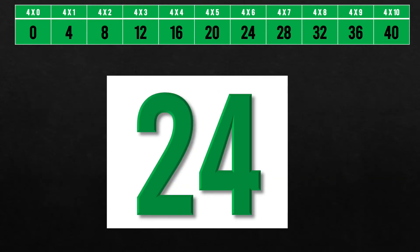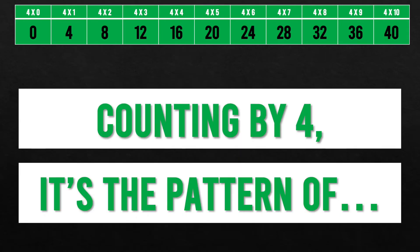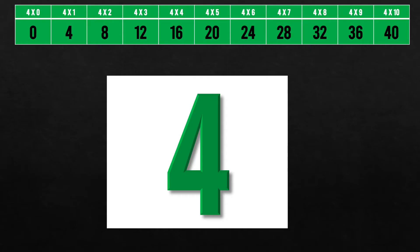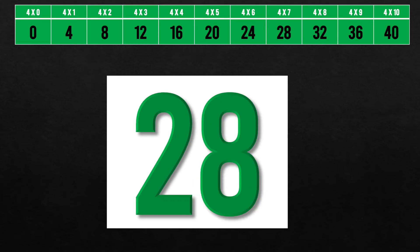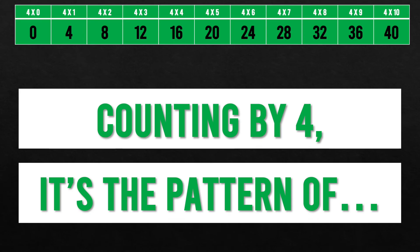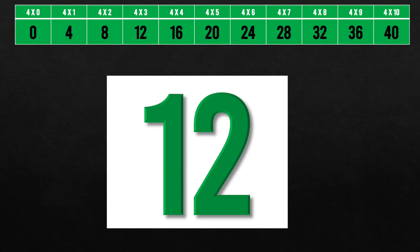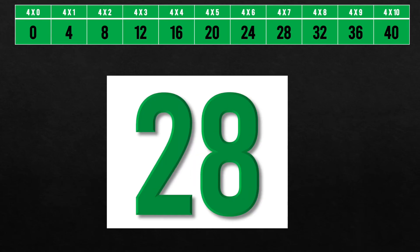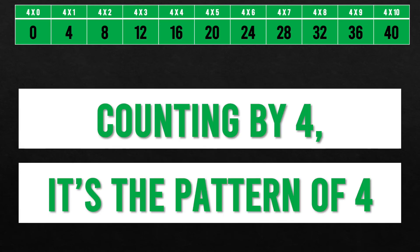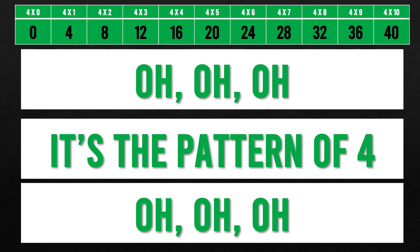4, 8, 12, 16, 20, 24, 28, 32, 36, 40. Counting my score — it's a pattern of 4. 4, 8, 12, 16, 20, 24, 28, 32, 36, 40. Counting my score — it's a pattern of 4.